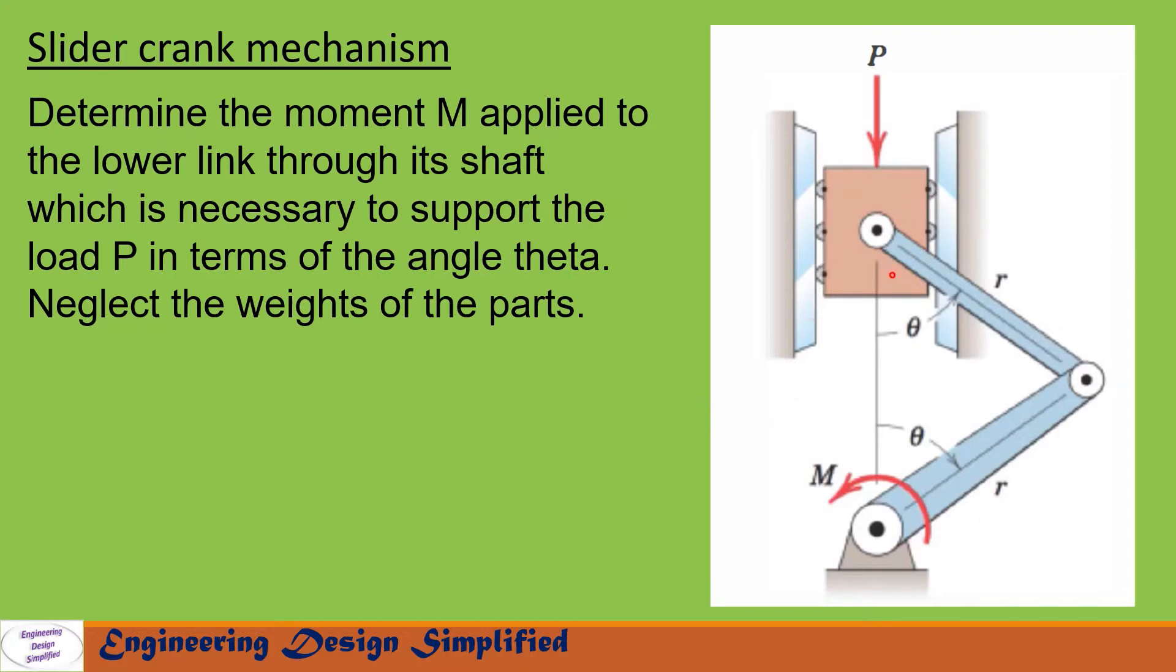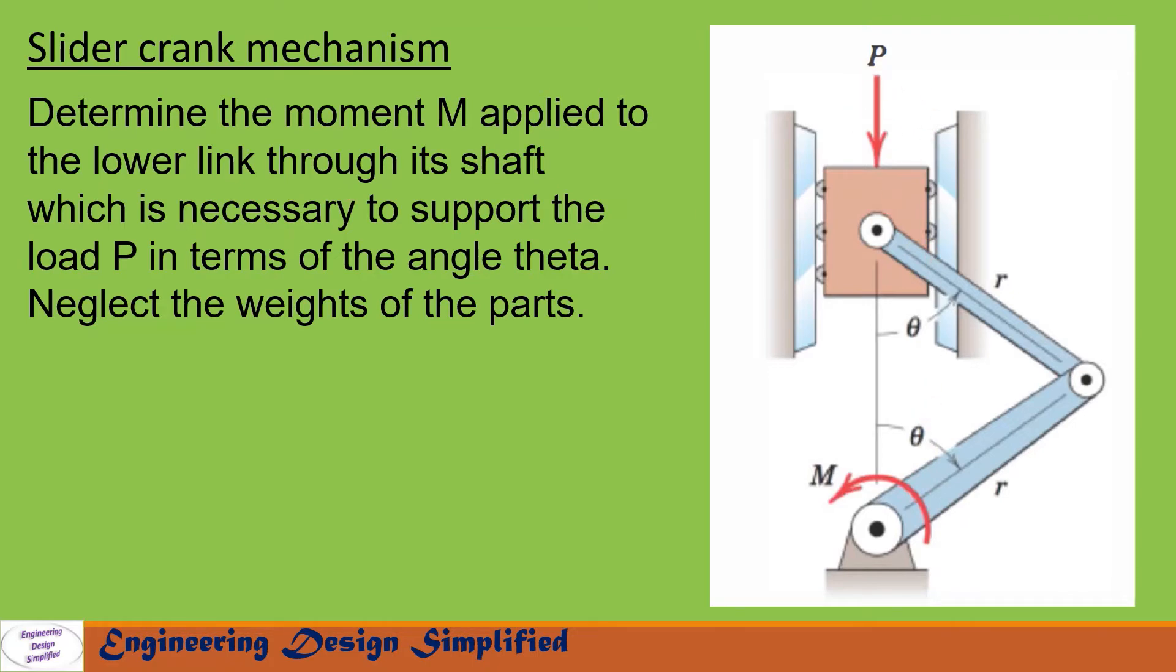This link is a crank of length r and the coupler link length is also equal to r. There is a moment M applied in the counterclockwise direction on the crank and we need to derive an expression in terms of theta to support this load P for equilibrium.